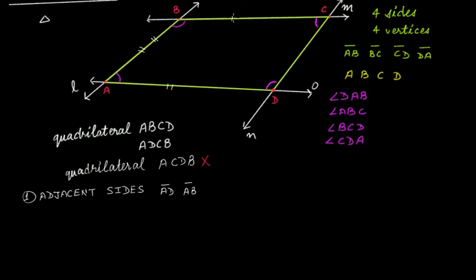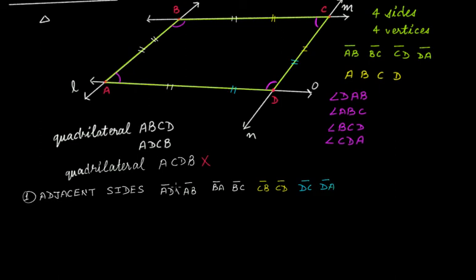Similarly, BA and BC are adjacent sides. In the same fashion, CB and CD are adjacent sides, and DC and DA are adjacent sides. So these are the adjacent sides of this quadrilateral.